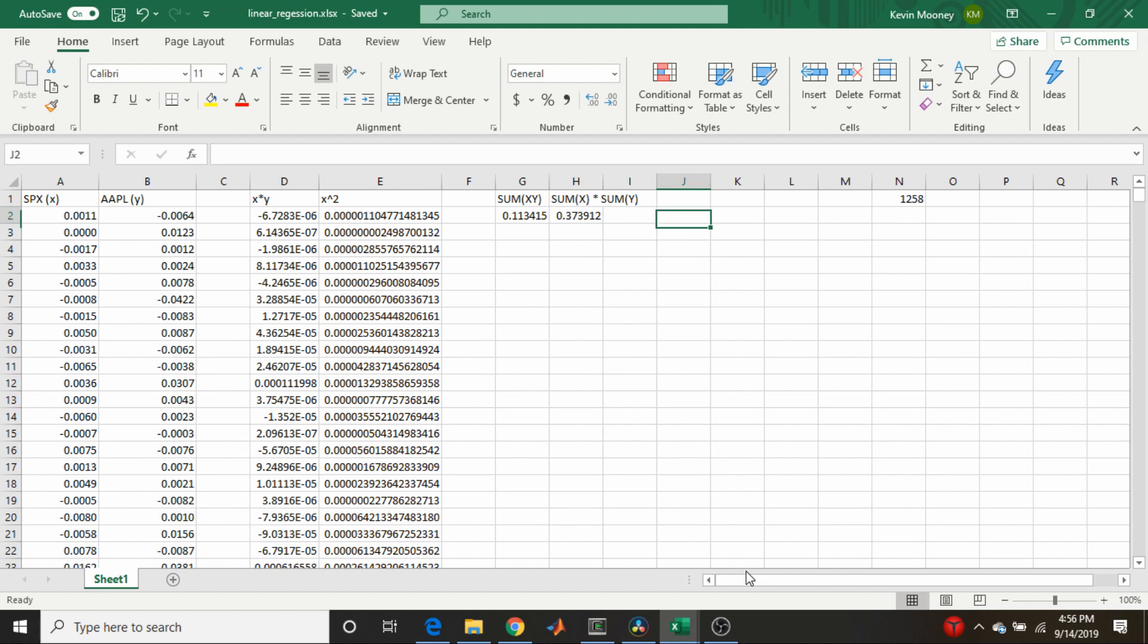And we're done there. And likewise for the sum of the x squared. Let's just call this sum x squared. It's going to be the summation of the column e. So this is equal to sum e2 to e1259. Done.